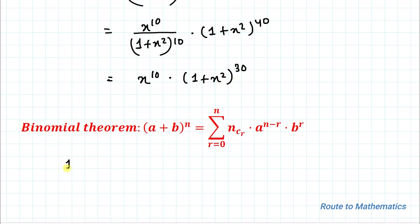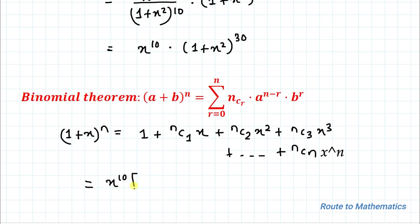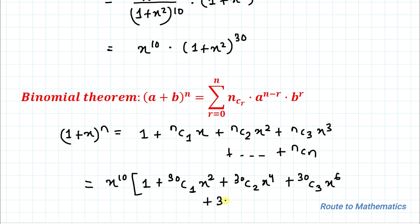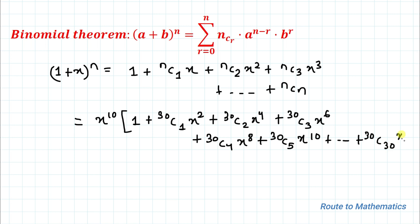From the binomial theorem, we know that (1 + x)^n = 1 + nC1·x + nC2·x² + nC3·x³ + … Applying this expansion to (1 + x²)^30, and taking x^10 as common, we get: 1 + 30C1·x² + 30C2·x⁴ + 30C3·x⁶ + 30C4·x⁸ + 30C5·x^10 + … up to 30C30·x^60.